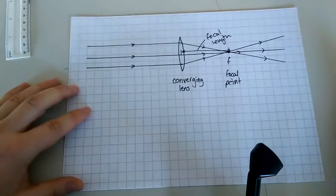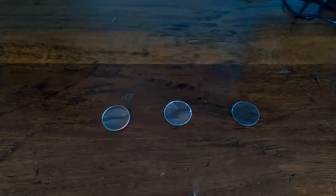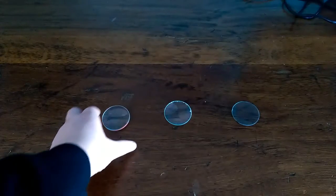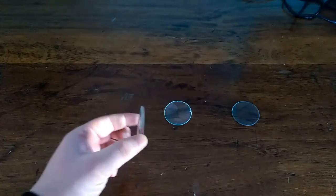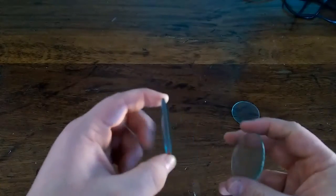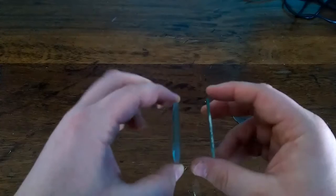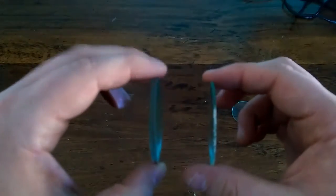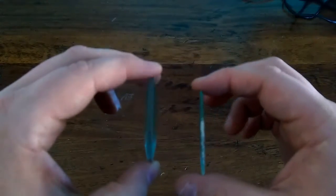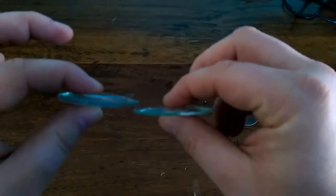I'll show you now how you actually measure that practically. I have here three different lenses, and they're all converging lenses — look at the shape. You can just about make out that some of the lenses are a lot thicker than others. This one's much, much thinner, and I think this one is even thinner again.